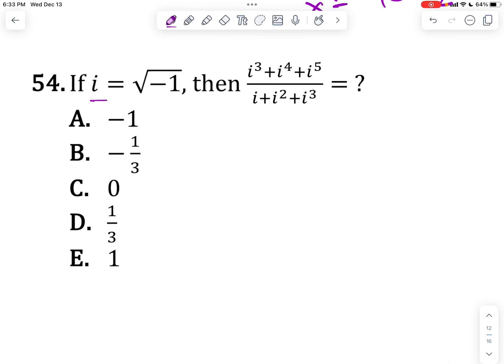Moving on. If i equals square root of negative 1, then what is this? This looks like a mess. How do we solve this? And how do we get anywhere close to an answer option that looks like this? Let's just take it one piece at a time. Treat this as six individual problems. We'll start with the simple one. i is equal to square root of negative 1.